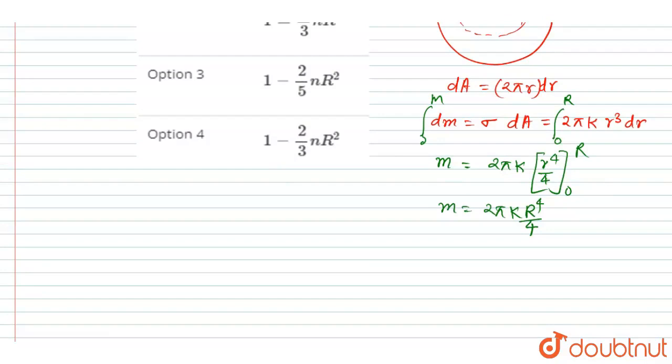Now it is asked in the question that moment of inertia about an axis passing through center and perpendicular to the plane of the disk, right? So if I talk about the moment of inertia of the ring, that will be dm into small r square. So dm, already we calculated, if you see, 2πk r cube. So I will multiply it with r square.